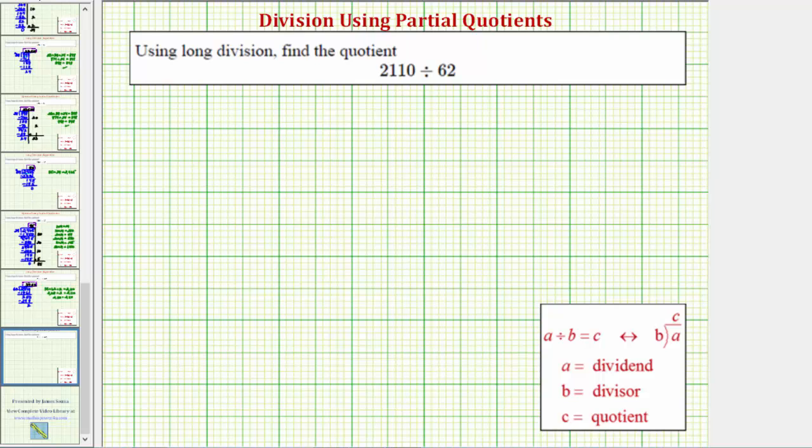The first step is to write the quotient in long division form, which would be this form here. So we can write the given quotient as 2110 divided by 62.